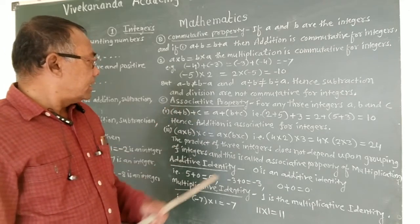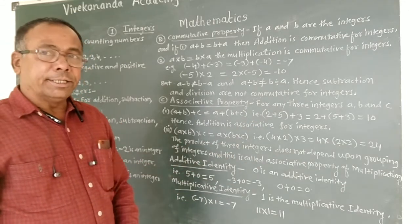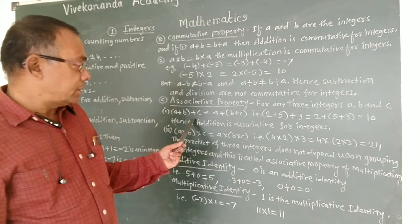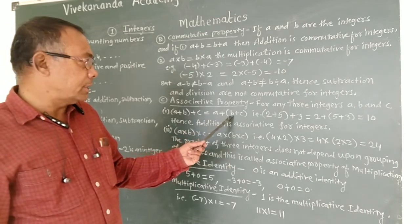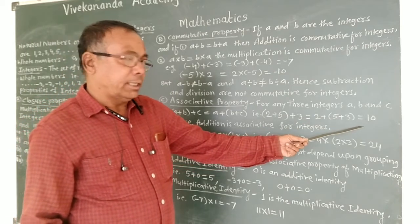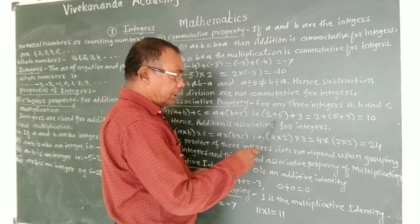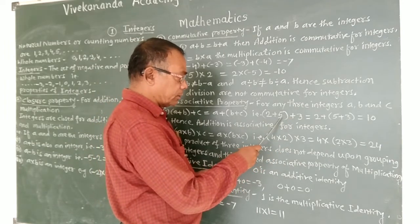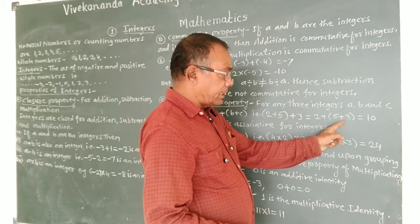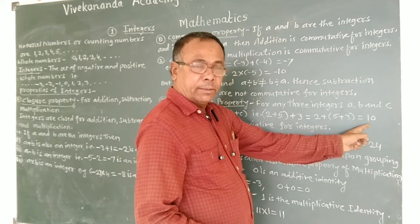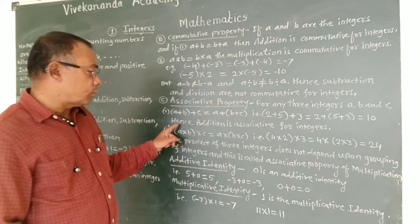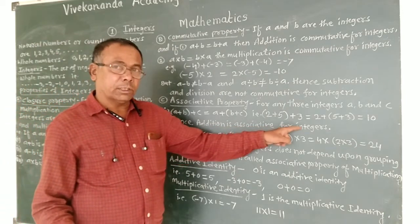Now we will see the third property, that is the associative property. For any three integers a, b, and c, if (a plus b) plus c is equal to a plus (b plus c), then addition is associative. For example, (2 plus 5) plus 3 equals 7 plus 3 equals 10, and 2 plus (5 plus 3) equals 2 plus 8 equals 10. Therefore, addition is associative for integers.